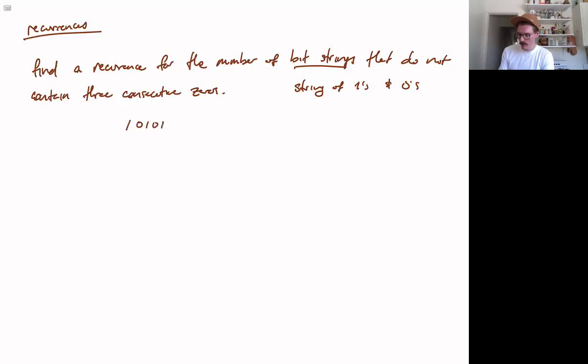And the requirement is just that it does not contain three consecutive zeros. So something like 1, 0, 1, 0, 1, 0, 0, 1, 1, 0, 1, et cetera. This is OK.